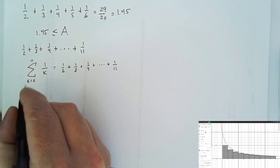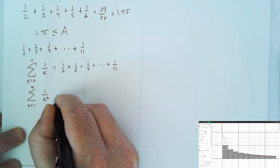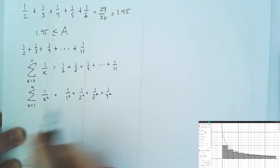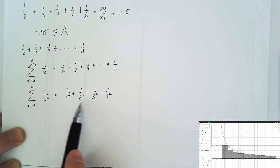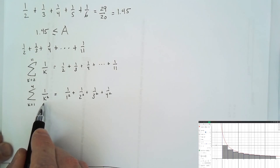If we had a different function, like 1 over x squared, we might want to add up 1 over k squared from k equals 1 to 4. That gives 1 over 1 squared, plus 1 over 2 squared, plus 1 over 3 squared, plus 1 over 4 squared, then we stop. Sigma notation is just a shorthand way of writing down a sum of many numbers.